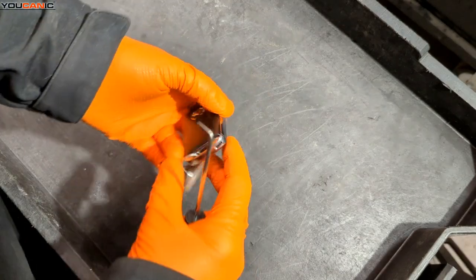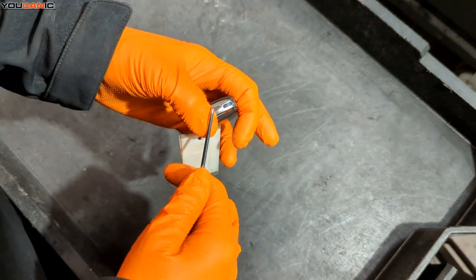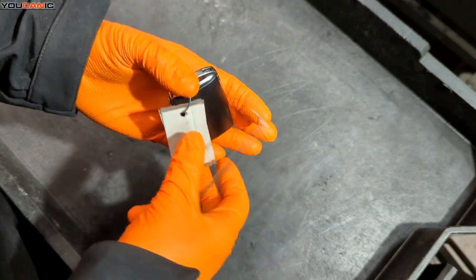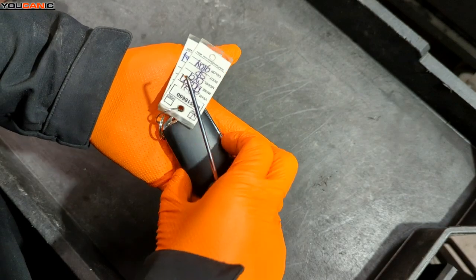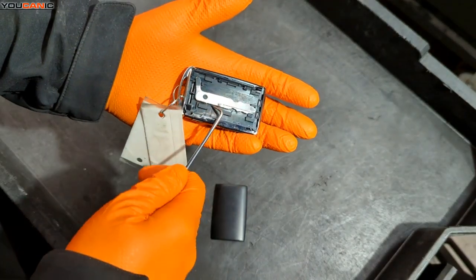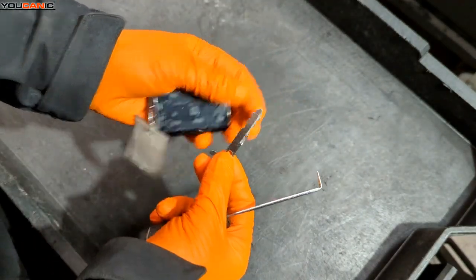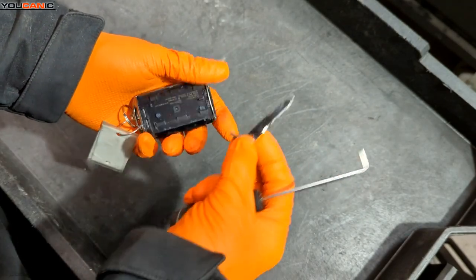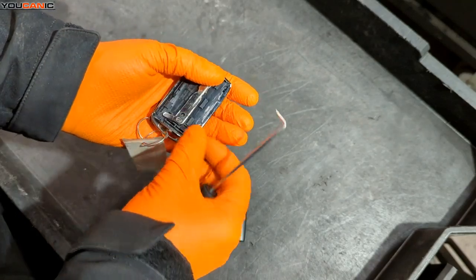So first we have a little tab here and we just need to open that. When you open that, this back piece slides up and opens out. That is also how you gain access to your manual key if you needed to use that to unlock the door if this battery is completely dead.